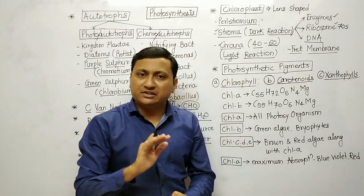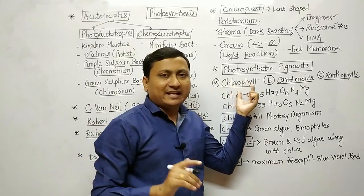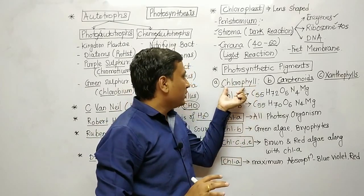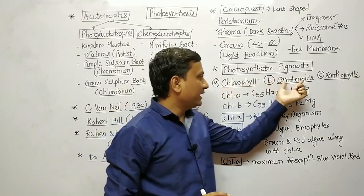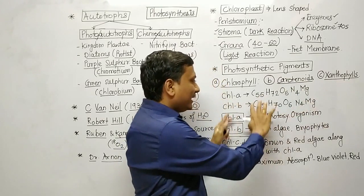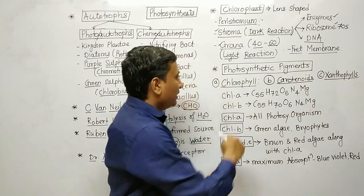Photosynthetic pigments are categorized into three classes: chlorophylls, carotenoids, and xanthophylls.